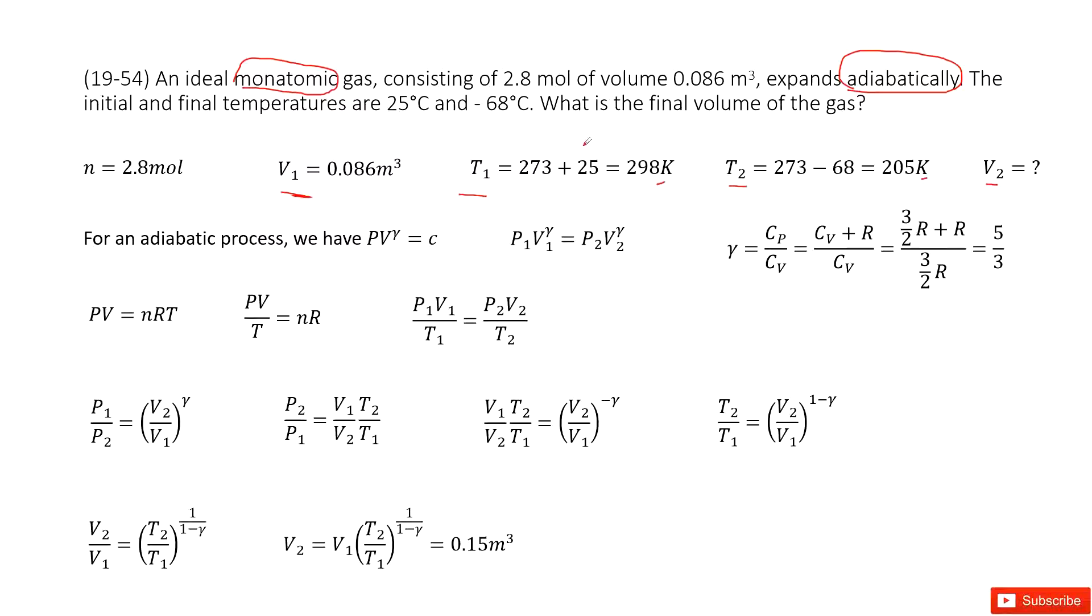Now we look at the first keyword: adiabatic process. That tells us PV gamma equals a constant. P times V to the power gamma equals constant. That means initial state P1 V1 gamma equals final state P2 V2 gamma.